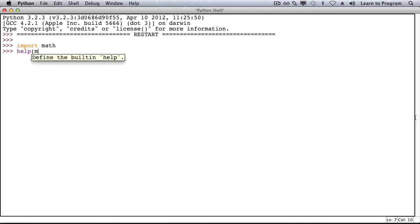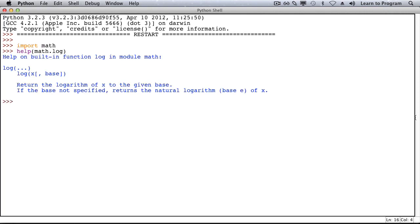Module math has a log function. This function returns the logarithm of a number with a given base. Here our base is two because we're dealing with binary. If I ask what the logarithm of two is in base two, it tells me one. If I ask what the logarithm of four in base two, it tells me two. Eight is three. The logarithm of sixteen in base two is four. The logarithm of thirty-two in base two is five.